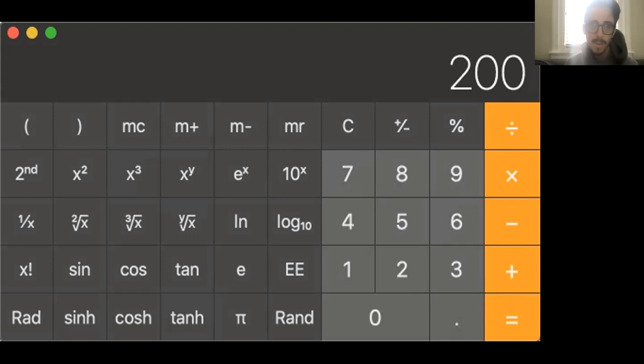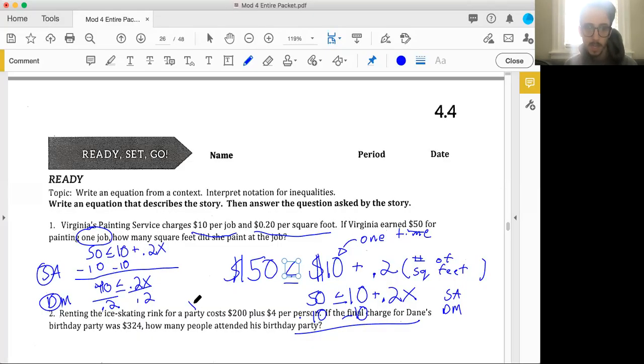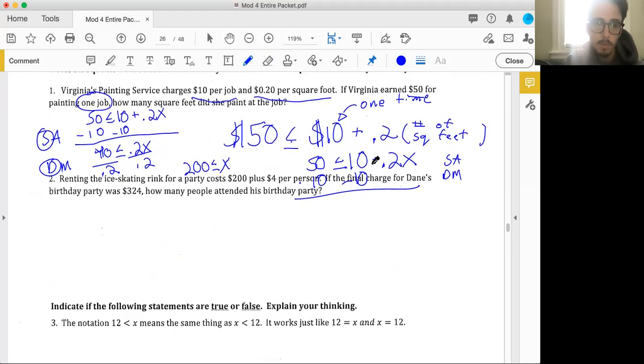So that, and again, I don't know why they use the inequality for this. But anyway, all right. So we're back here. x is less than or equal to—no, switch it. Sorry. 200 is less than or equal to x. So this is claiming that Virginia probably did 200 square feet. So 200 square feet. And I'll abbreviate this. Take some time. Try problem two.